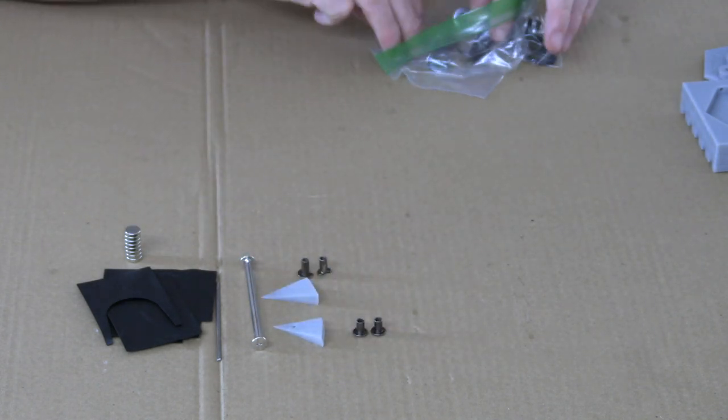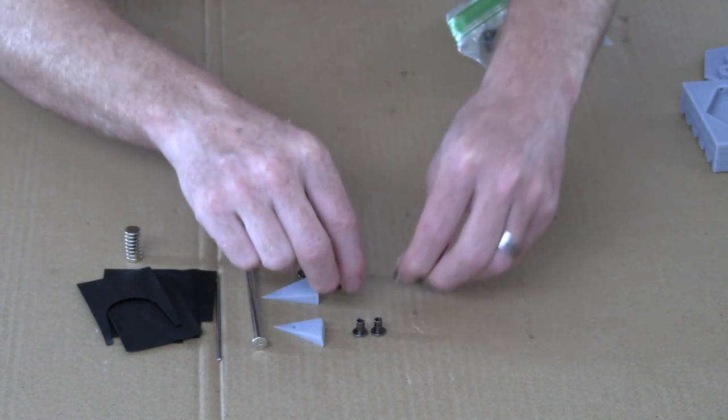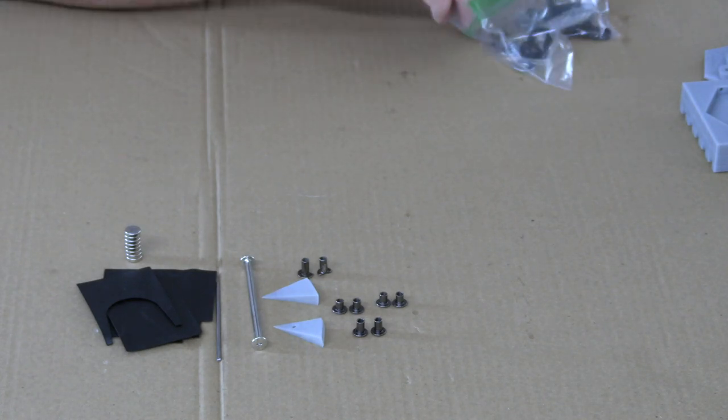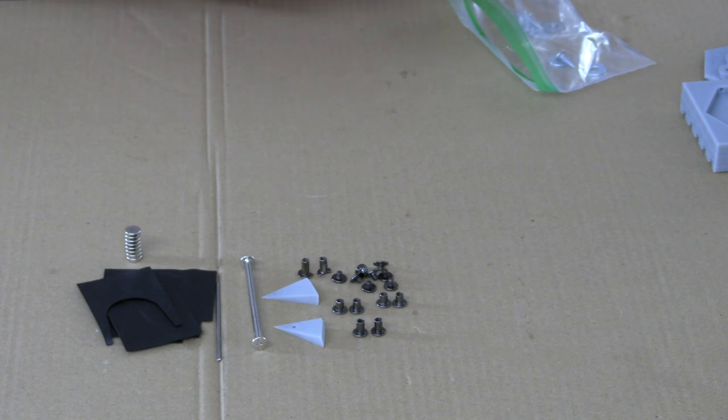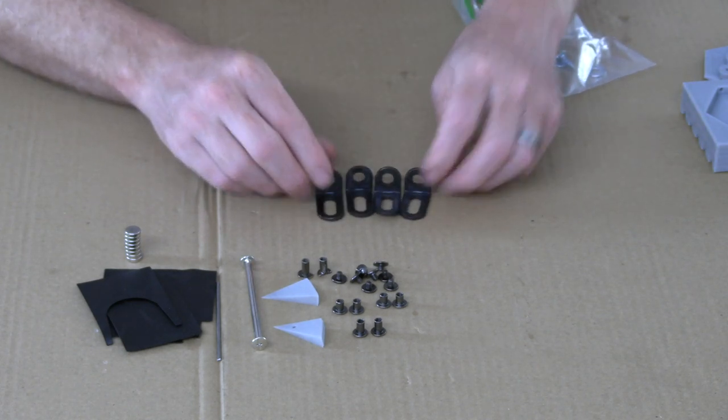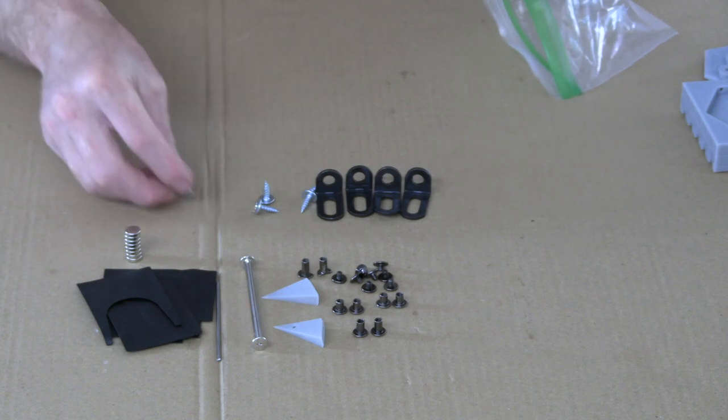You're also going to get two 10mm Chicago screws, two 8mm Chicago screws, four 6mm Chicago screws, and enough heads to screw them all. You're also going to get four angle brackets, as well as four wood screws and four washers.